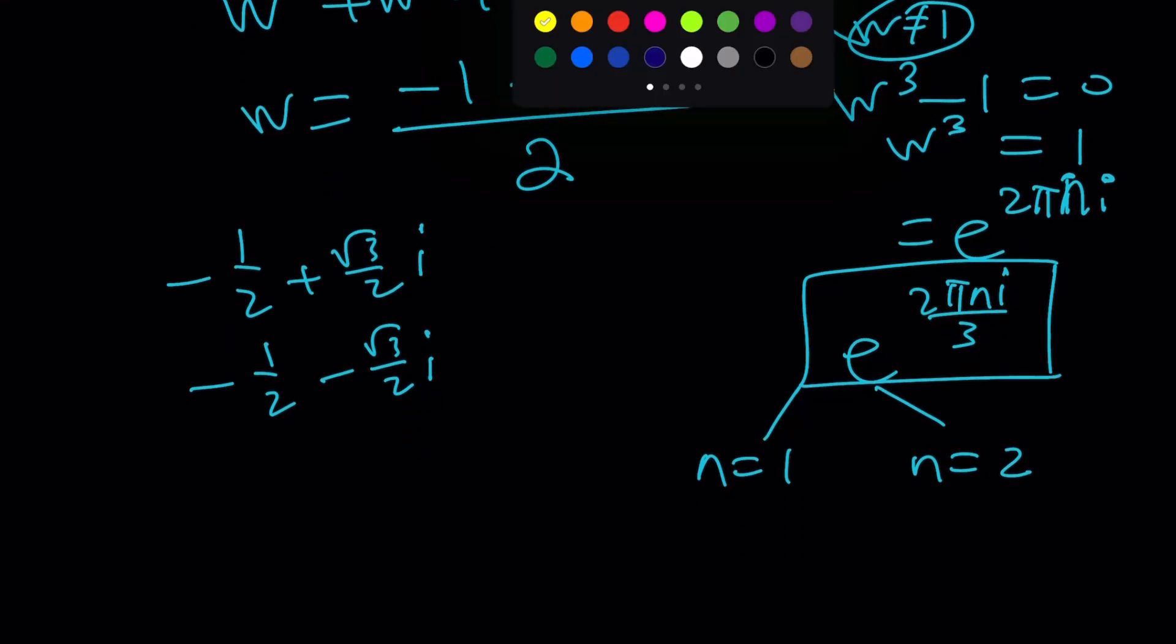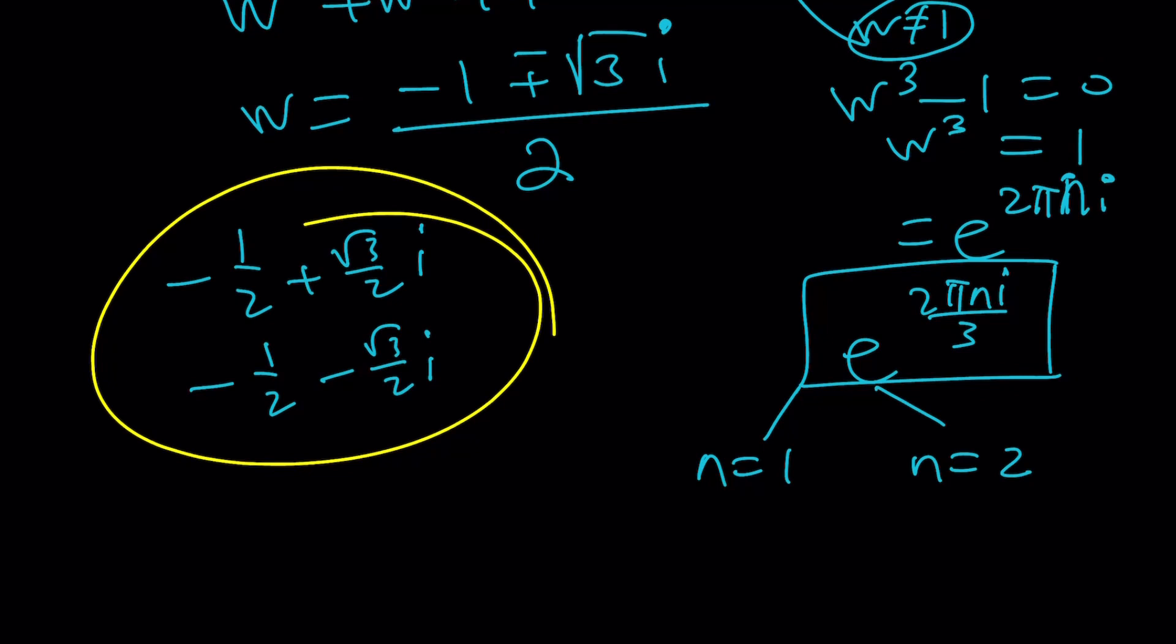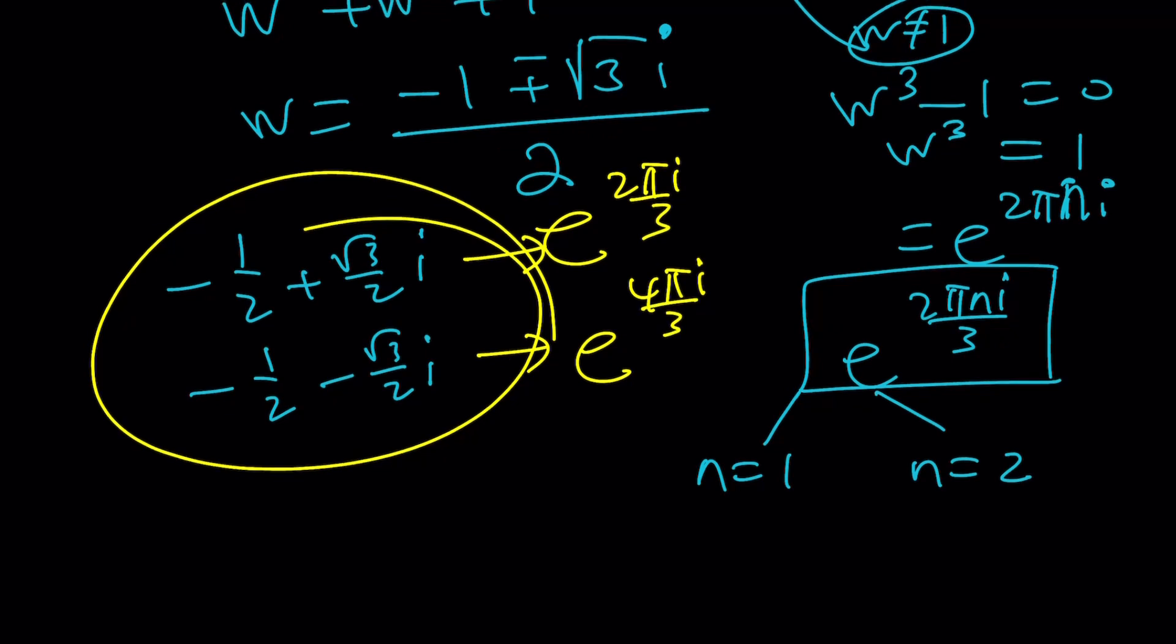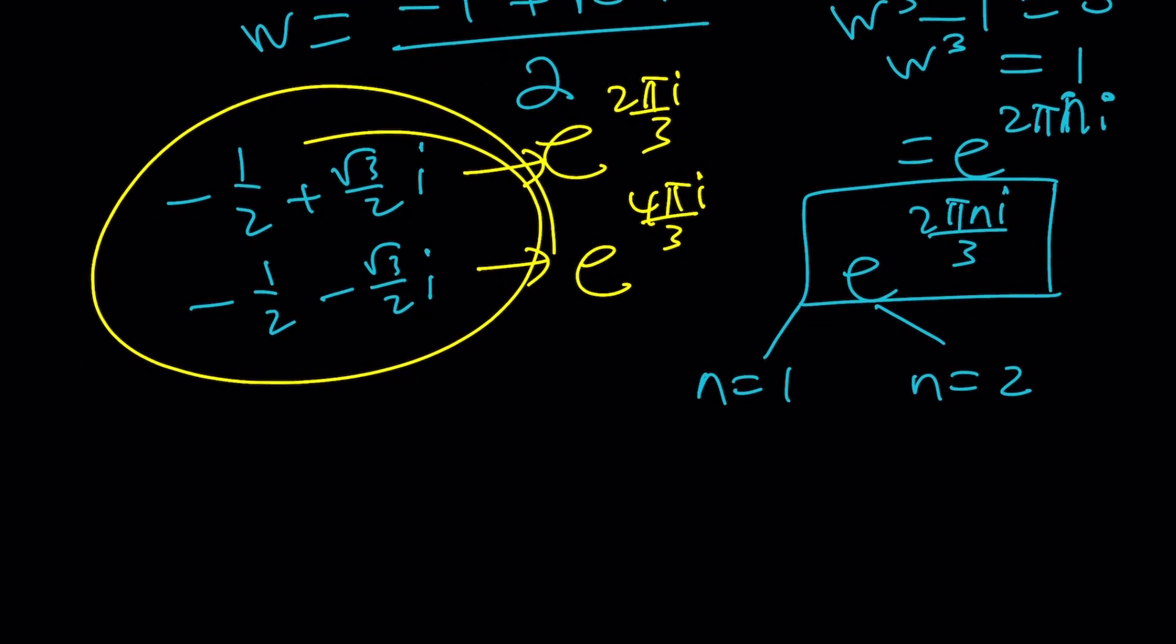Those are going to be the solutions. But are they actually solutions? We have to think about it. So this one is e to the power two pi i over three, I think. And this one is four pi i over three. I think this one is bigger, so it should be in the fourth quadrant. Good.